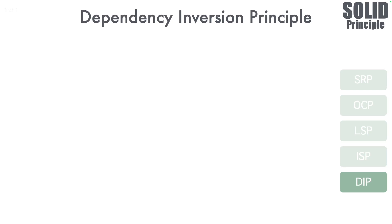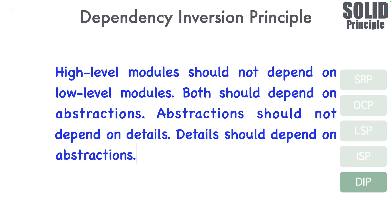What does the definition say? Let's have a look at the official definition. High-level modules should not depend on low-level modules. Both should depend on abstractions. Abstractions should not depend on details. Details should depend on abstractions. Well, that is quite a lot of jargon. Let's try to make light work of this definition.